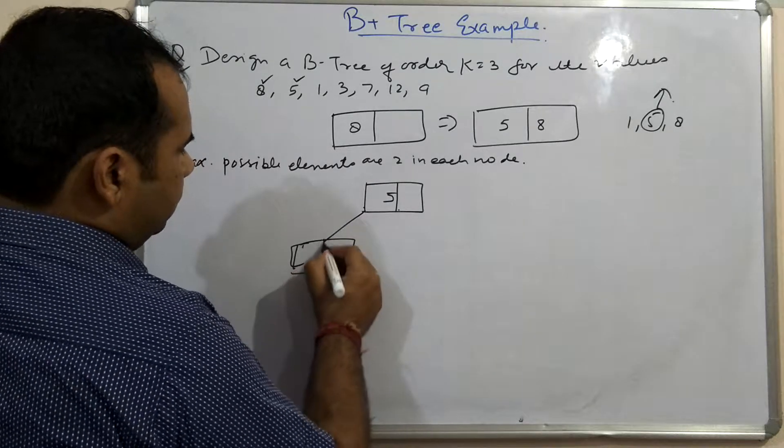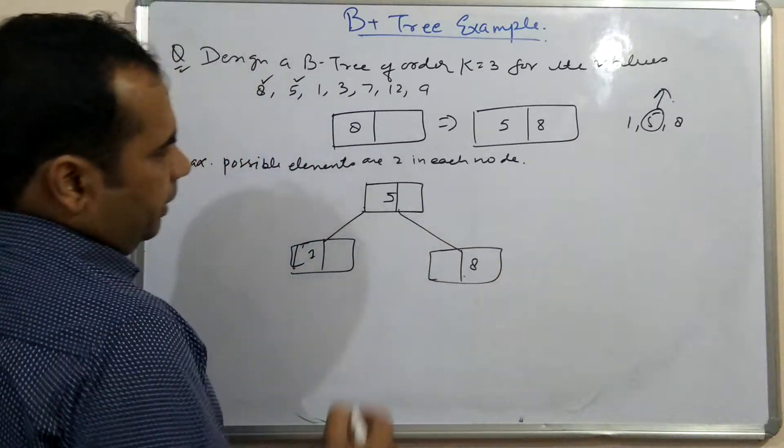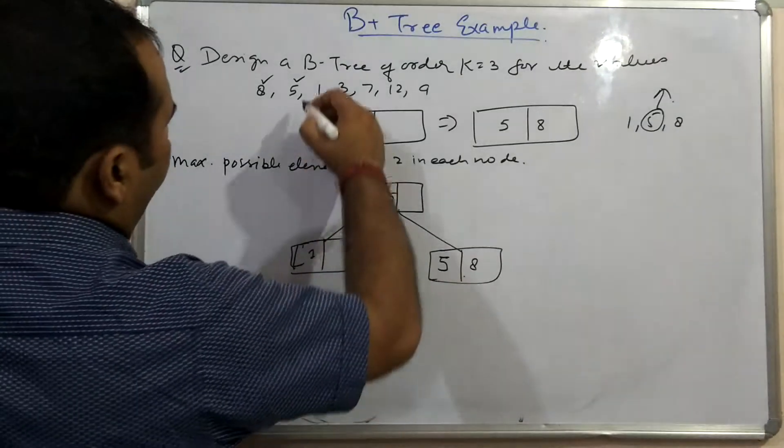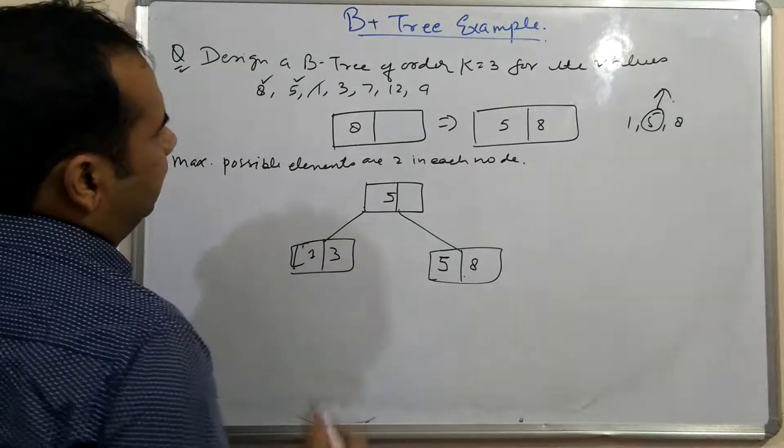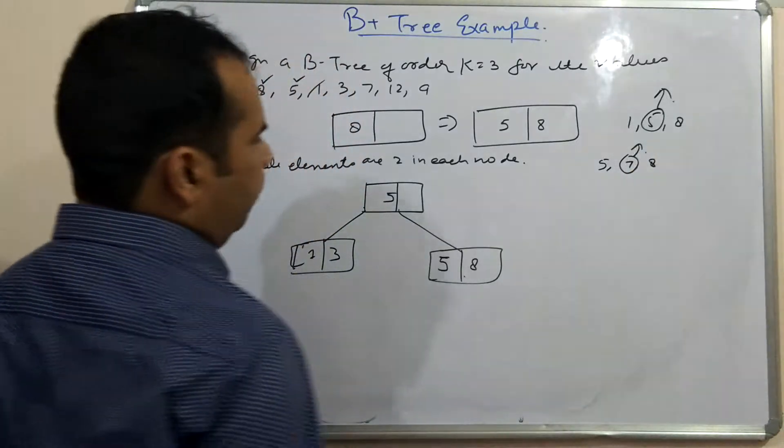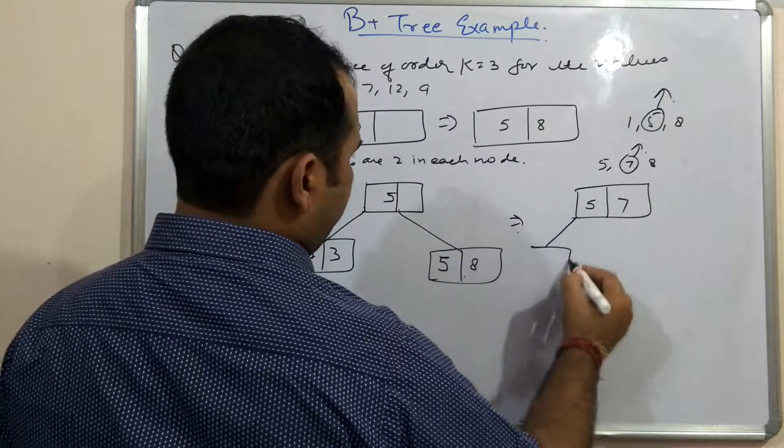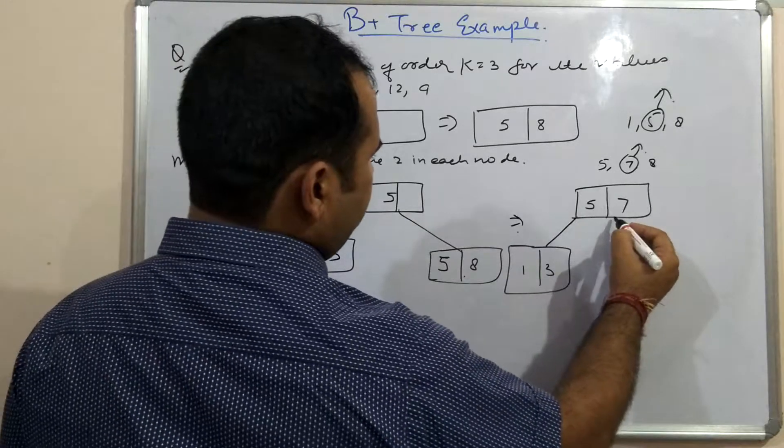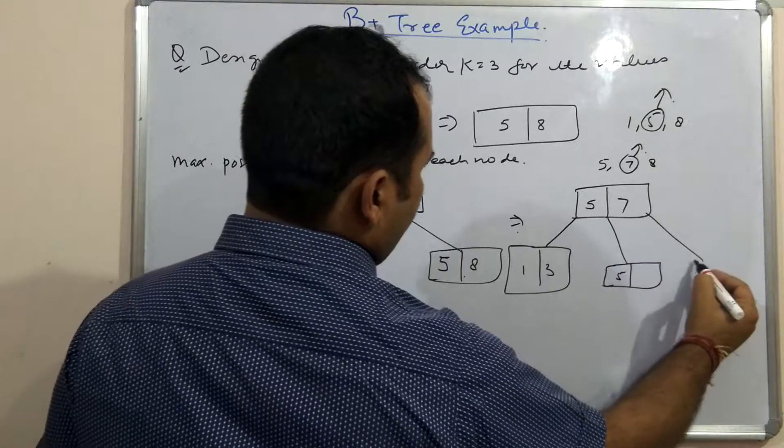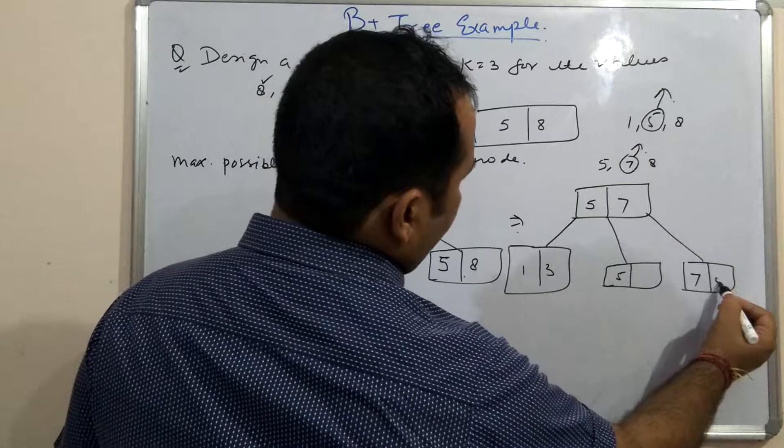After splitting, 5 goes up, and you have 1 on the left and 8 on the right. In a B+ tree, 5 is copied to the leaf level as well. Next element is 3, which goes here without any problem. Next element is 7, which goes here. Total elements become three: 5, 7, and 8. So 7 will go up. The tree becomes: 5 and 7 at the top, with 1 and 3 on the left, 5 and 7 in the middle, and 8 on the right.